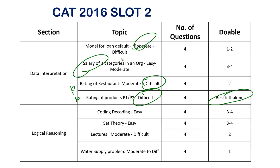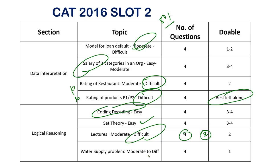Even in Slot 2, about 50% of sets were manageable. In Logical Reasoning, the coding-decoding question was damn easy — you could crack it very quickly. Set theory was easy, and lectures was moderate to difficult, but trust me, 2 out of 4 questions were manageable just by looking at the options carefully.